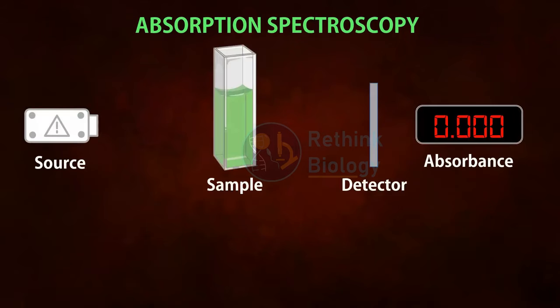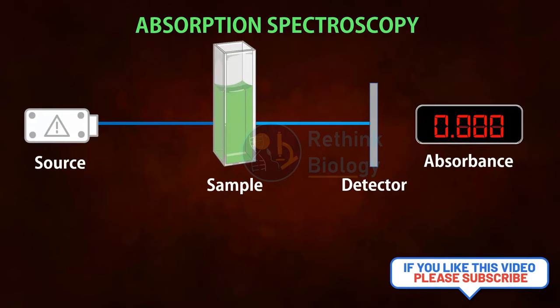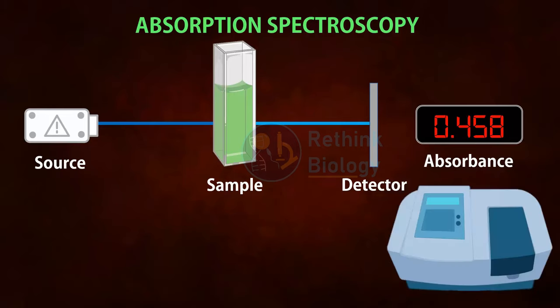The basic principle of absorption spectroscopy is that when a beam of monochromatic light passes through a solution or matter, some of its radiation may be absorbed. This absorbance is measured with the help of an instrument known as a spectrophotometer.